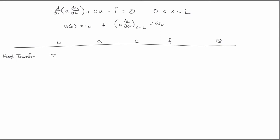So if we're interested in doing heat transfer, U is the temperature, A is the thermal conductivity, so like KA. C is the convection, F is the heat generation, and Q is the heat.